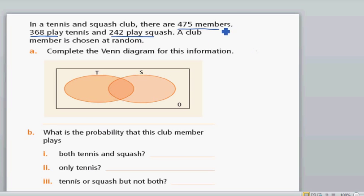So the total is 475. For tennis, the people who play tennis is 368, and the people who play squash is 242.